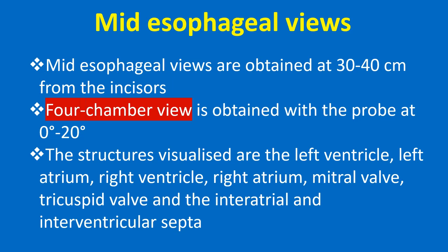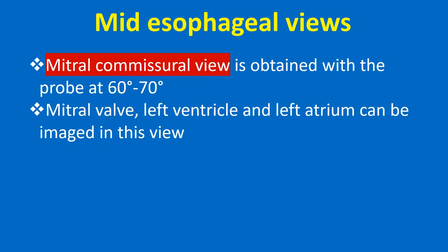Mid esophageal views are obtained at 30-40 cm from the incisors. The four chamber view is obtained with the probe at 0-20 degrees. The structures visualized are the left ventricle, left atrium, right ventricle, right atrium, mitral valve, tricuspid valve, and the inter-atrial and intra-ventricular septa. The mitral commissural view is obtained with the probe at 60-70 degrees.